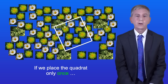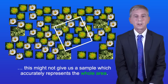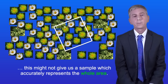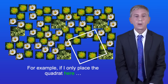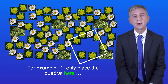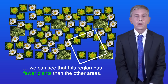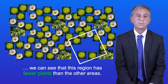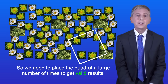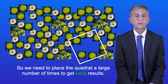If we place the quadrat only once, this might not give us a sample which accurately represents the whole area. For example, if I only place the quadrat here, we can see that this region has fewer plants than the other areas. So we need to place the quadrat a large number of times to get valid results.